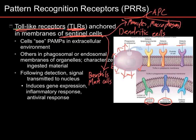If they bind some lipopolysaccharide, they know there's gram-negative bacteria — that's a problem, they should raise the alarm. So only certain cells, called sentinel cells, have TLRs. TLRs crucially detect in the extracellular environment.